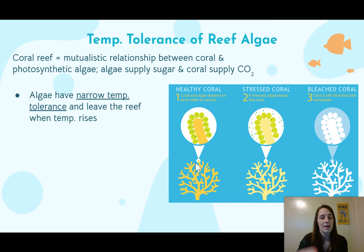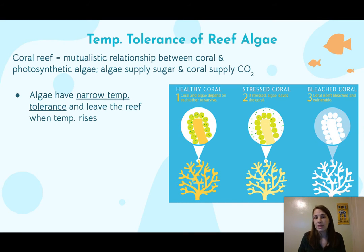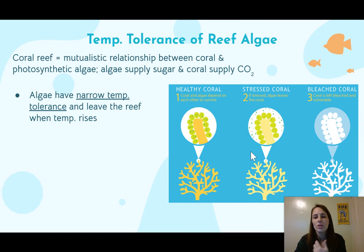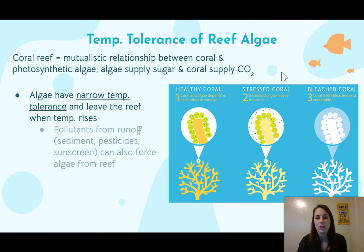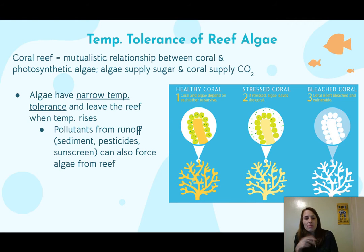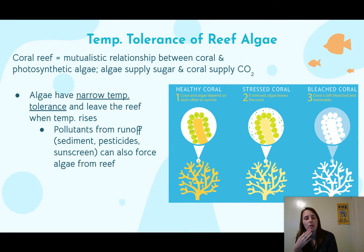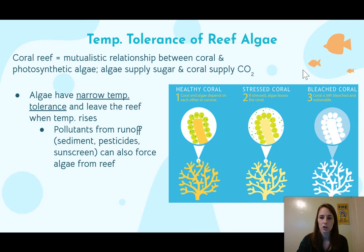The algae have a narrow temperature tolerance. If a reef gets too warm — which happens with rising ocean temperatures — the algae will leave. In a healthy coral we see very colorful coral because of this algae in the symbiotic relationship. When stressed, the algae starts leaving and eventually the coral gets bleached. Bleached coral is basically dying because the coral animal dies quickly without the sugar supplied by the algae. Pollutants from runoff such as sediment, pesticides, and sunscreen can also force algae from the reef, which will bleach the coral and cause it to die without that sugar for food.